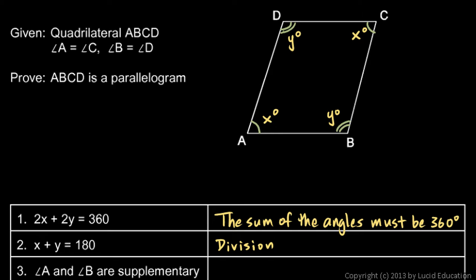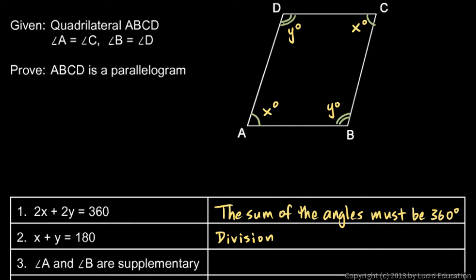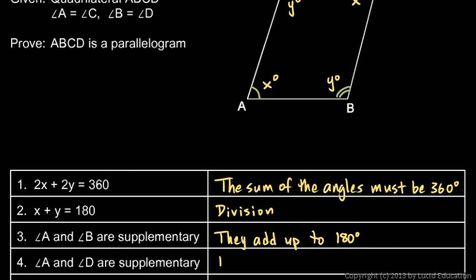If x plus y is 180, angle A and angle B — that's angle A and that's angle B — x plus y has to be 180, so angle A and angle B have to be supplementary because they add up to 180. You could say the definition of supplementary angles. The same thing is true about angles A and D; they are also supplementary because they add up to 180.